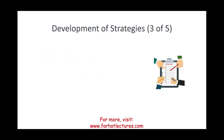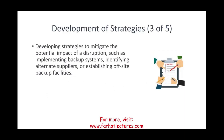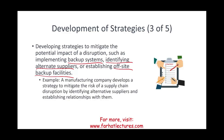Then you develop a strategy to mitigate the potential impact of disruption. What could some strategies be? For example, a backup system — if my website is down, I can migrate immediately to another website. Or alternate suppliers — during COVID, if I had many suppliers in China and China was shut down, do I have alternate suppliers? Establishing off-site backup facilities is another strategy. An example: a manufacturing company develops a strategy to mitigate supply chain disruption by identifying alternative suppliers and establishing relationships with them in case of war, political events, or unrest.